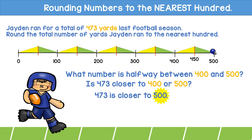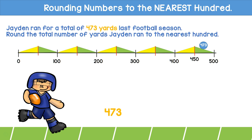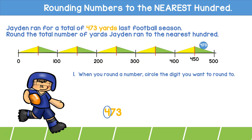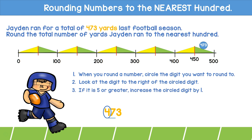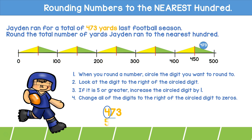Now let's try the step-by-step method. We're going to start with the digit four since it's in the hundreds place. We're going to circle it. We're going to look at the digit to the right of the circled digit, which is seven. Since it's five or greater, we're going to increase the circled digit by one and we're going to change all of the digits to the right of the circled digit to zeros. 473 rounds to 500.